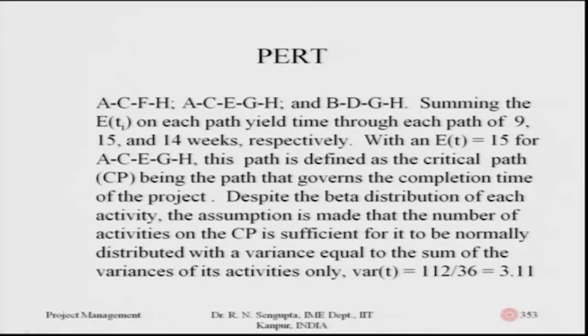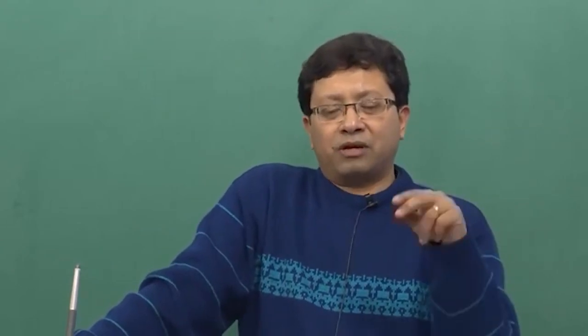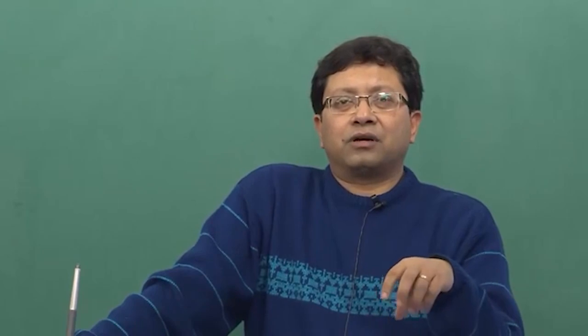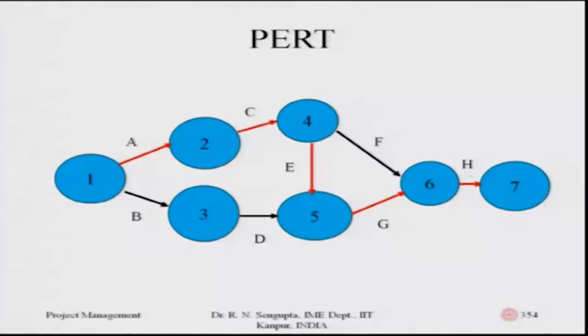Despite the beta distributions of each activity, the assumption is made that because the number of activities on the critical path is high, we can apply the central limit theorem. The variance of the critical path is found by summing the variances of all activities on the critical path; the standard deviation is then the square root of that sum. In slide 353, the activities on nodes are converted to activities on arcs with one starting node — the critical path A-C-E-G-H remains the same.